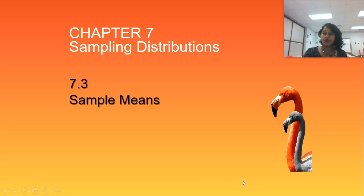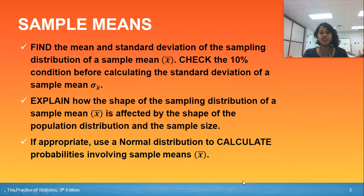Hi there, welcome to chapter 7.3 where we're discussing sample means. The distinction between chapter 7.2 and 7.3: in 7.2 we talked about sample proportions because we dealt with categorical data. Here we're going to talk about sample means because we're dealing with quantitative data.